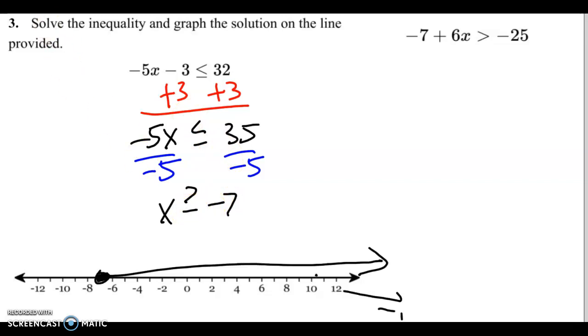We go to negative 7 on the number line. And since it's greater than, we go up. And since it has equal to, we fill in the circle. So because the arrow is pointing to the right, we go to the right. That works as long as the x is on the left side, or the variable is on the left side.